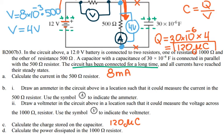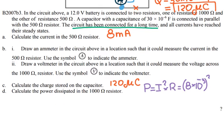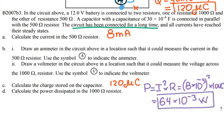For part D, they ask you to calculate the power dissipated by the 1000-ohm resistor. Using P = I²R: P = (8 × 10⁻³)² × 1000 = 64 × 10⁻³ watts, so the answer is 64 milliwatts.